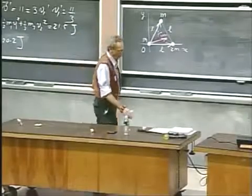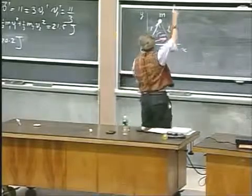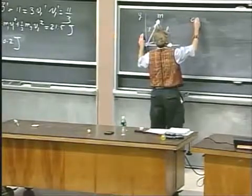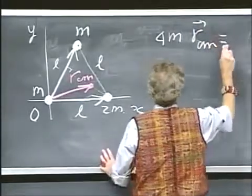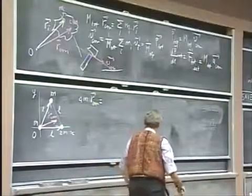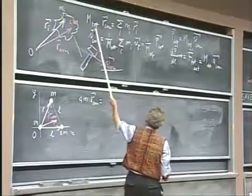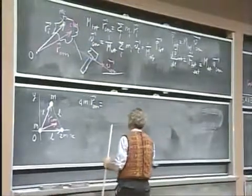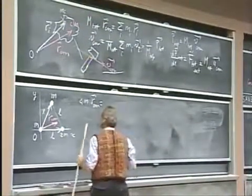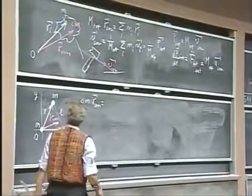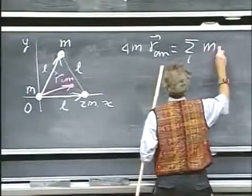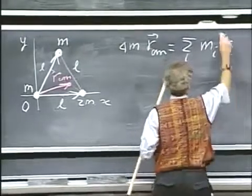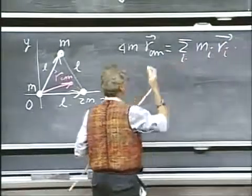We know that the total mass, which is 4m, times the position vector r center of mass... I go all the way up there on the blackboard. That's my definition for center of mass... equals the sum of the individual masses times their position vector. So it is the sum of i, m of i, times ri. And this i goes from one to three.